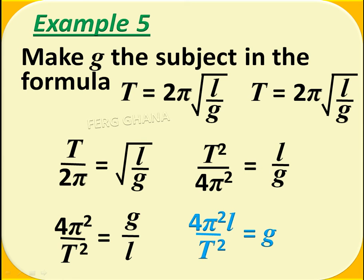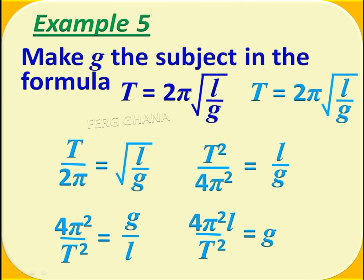Now, making G the subject, L which is dividing must now move to multiply the 4 pi square, so our G now equals 4 pi square L over T square. Or, 4 pi square L over T square equals G.